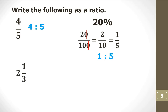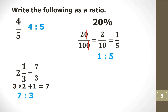Now, 2 and 1 third is a mixed numeral. Before we convert to ratio form, we need to convert it to an improper fraction first. To convert: multiply 2 times 3, then add 1, giving a numerator of 7. So the improper fraction is 7 over 3, and therefore the ratio is 7 to 3.